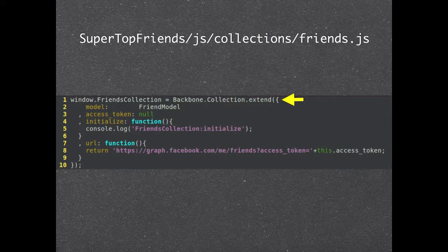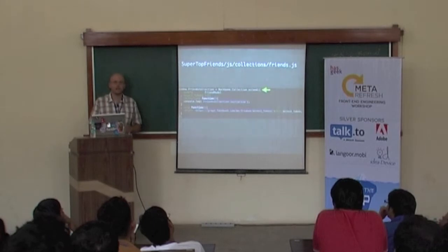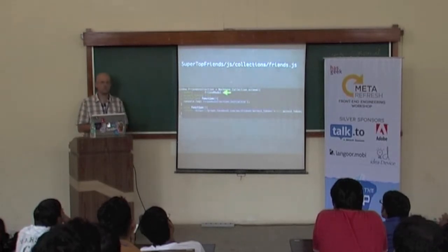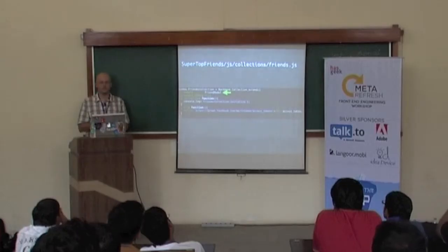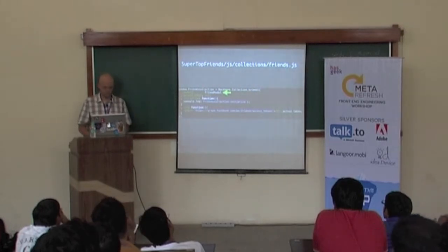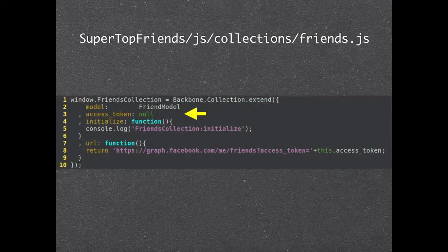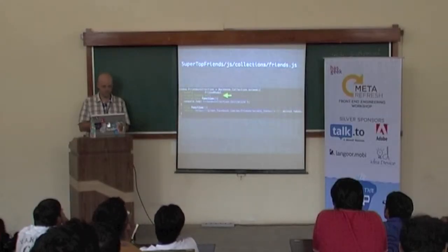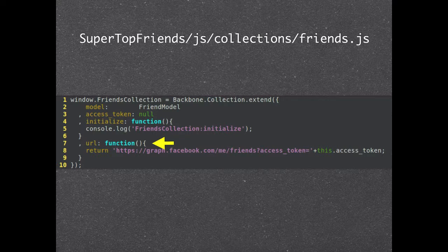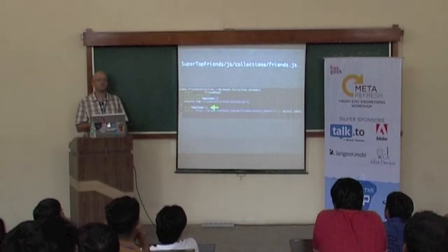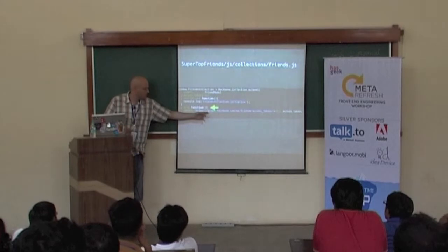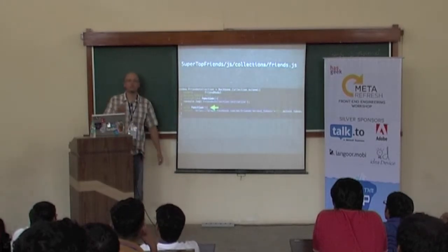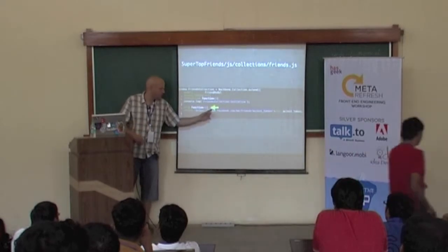This is our collection. We extend Backbone.Collection. Inside, this important property specifies what kind of model we can store — here it's a Friend model. We also have an access token because we interact with the Facebook API, so at some point we need to set the access token. Here is the URL — this is a function that returns a string, and it defines where we fetch data for our collection. This is from Facebook — graph.facebook.com.